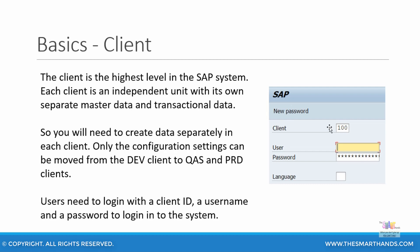We will look at these terminologies later and this will be done by your system administrators. What you can move from one client to another client is the configuration settings, so you don't have to repeat the configuration settings multiple times. For example, you will have something called a golden client or your development client where you do all the necessary configurations, and then you can move it to your quality assurance client or testing client.